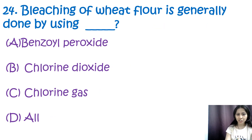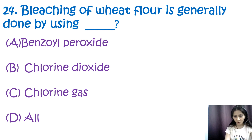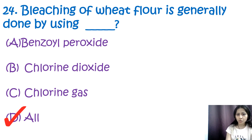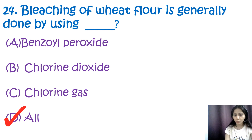Question 24: Bleaching of wheat flour is generally done using — options are benzoyl peroxide, chlorine dioxide, chlorine gas, and all of the above. The correct answer is D, all. Bleaching of wheat flour is done using agents like benzoyl peroxide, chlorine dioxide, chlorine gas, or nitrogen dioxide. This bleaching removes the yellow xanthophyll pigment present in milled grains to produce a finer, whiter flour.